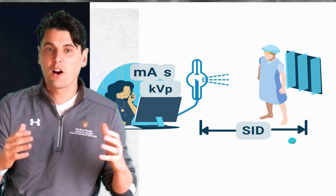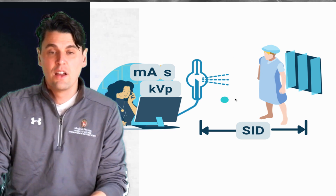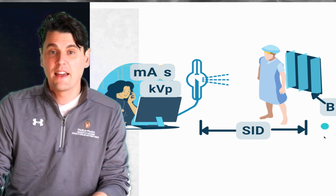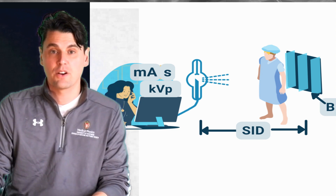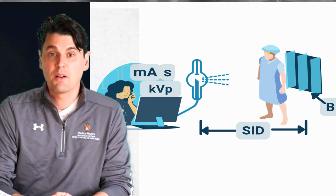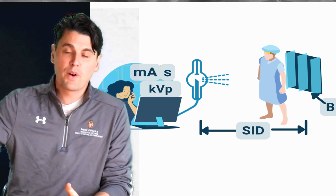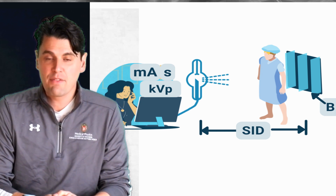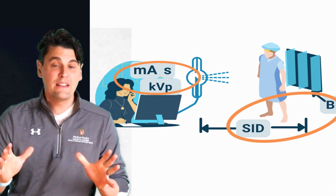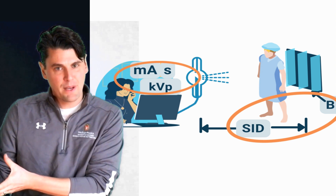We also have a couple other parameters related to the physical things in the room. The SID is the source-to-image distance — that's how far from our x-ray tube to our image receptor. And then the Bucky factor is related to the amount of x-rays that are being blocked or attenuated after they pass through the patient but before they get to the image receptor. Remember these two things go together: the SID and the Bucky factor.